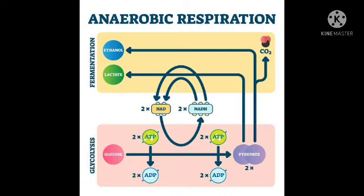Anaerobic respiration takes place in the absence of oxygen. It produces less energy. The end products are lactic acid or ethanol, carbon dioxide, and energy. In anaerobic respiration in muscle cells, glucose is converted into pyruvate, and in the absence of oxygen, pyruvate is converted into lactic acid and energy. In anaerobic respiration in yeast, glucose is converted into pyruvate, and in the absence of oxygen, pyruvate is converted into ethanol, carbon dioxide, and energy. This process is called fermentation.